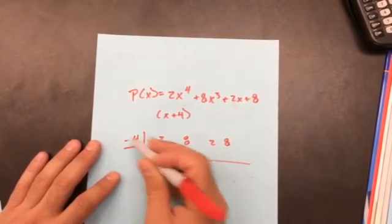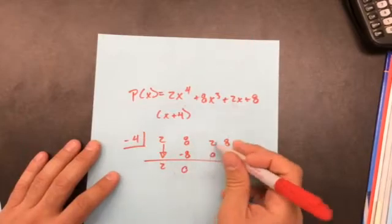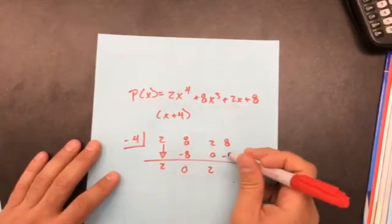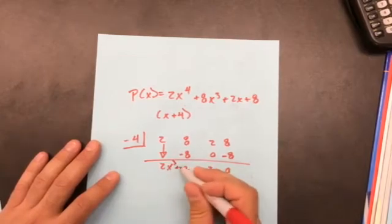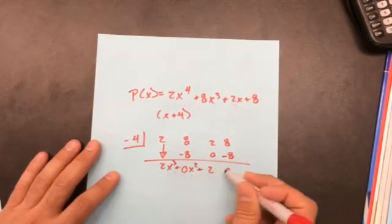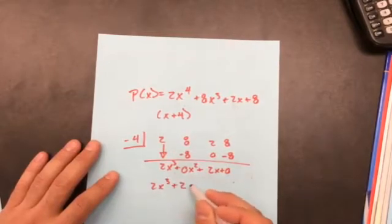First number comes down, which is 2. 2 times negative 4 is negative 8. Add those together. Remember that it goes one less.